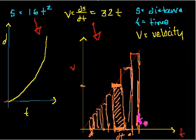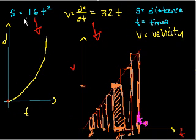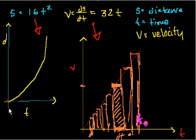Welcome back. So where I left off, we said that we had this equation, or this function, although I didn't write it with the function notation, where I said the distance is equal to 16t squared, and I graphed it.